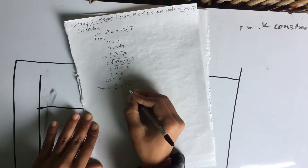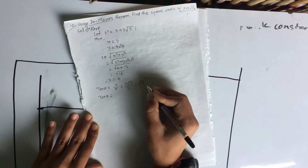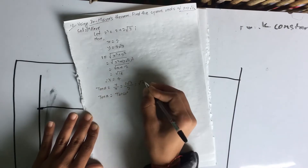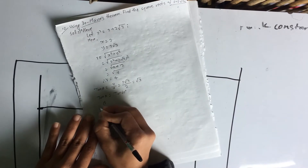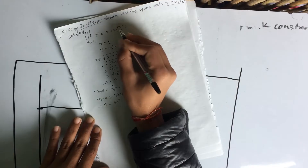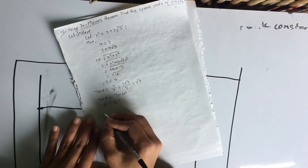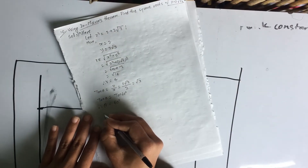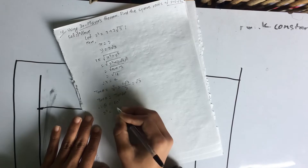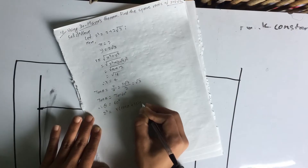tan θ equals 2√3 divided by x, which equals 2√3 divided by 2, giving √3. Since tan 60° equals √3, theta equals 60°. Now I will write the complex number in polar form: z squared equals r times (cos θ plus i sin θ).